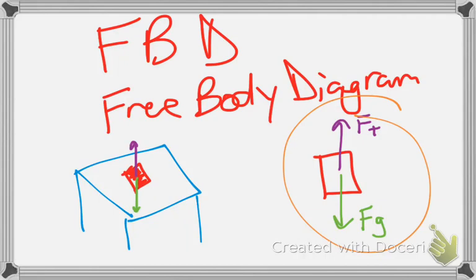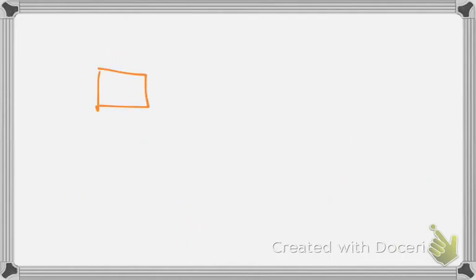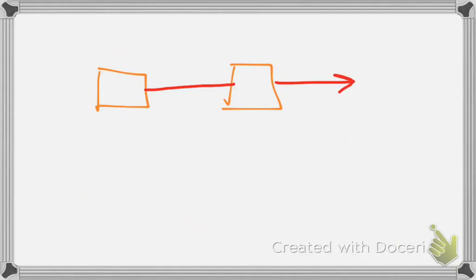It's just a simplified view of the world. So how does this help us out? If we get into more complicated scenarios — let's say we have one box and here's another box, and then we have a rope in between the two boxes. This rope is being pulled by some applied force, F-A.